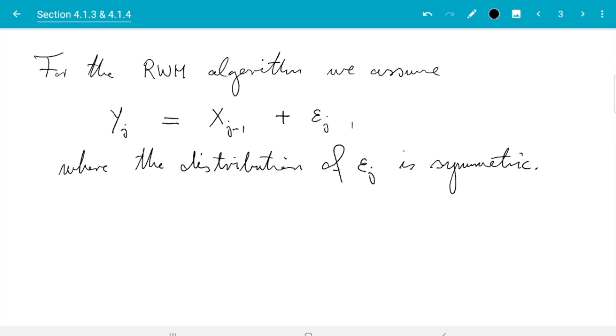So we could write down the algorithm like this. The most common case is where epsilon is normally distributed. So in general that would look like this.